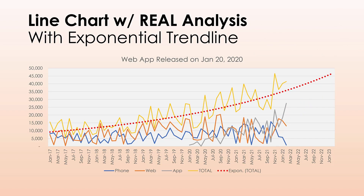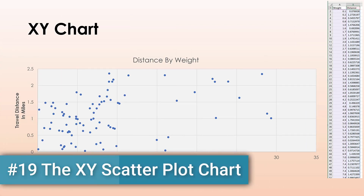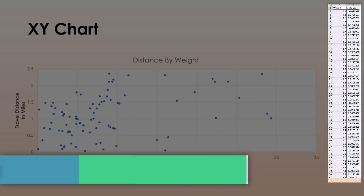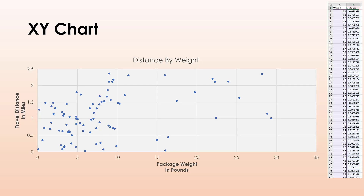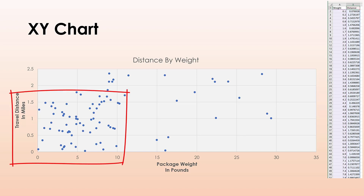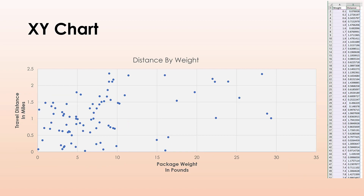While simple to do, I must warn you that without some background in statistical analysis you can get yourself into some big trouble. For those that know, the R-squared value for this line is 0.66, which is not a very high correlation. One more common analysis chart is the XY plot chart, which operates on just two and only two data sets. The concept is to plot the intersect values on the vertical and horizontal axis. Here we see a soft correlation that packages under 10 pounds typically need less than 1.5 miles to travel for delivery.